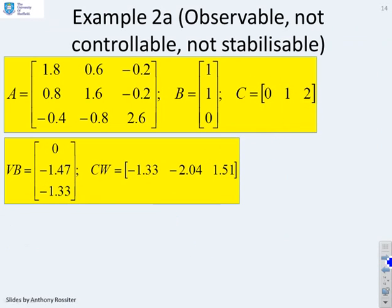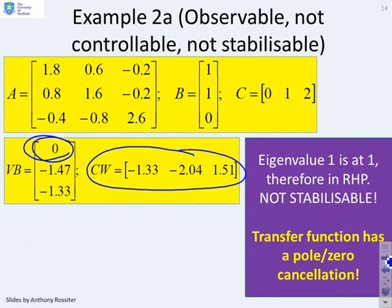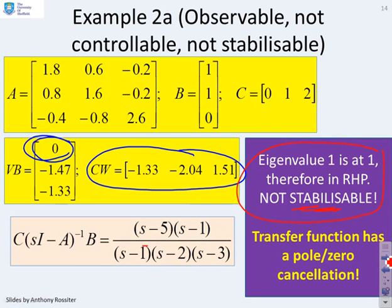Third example: a system that is observable but not controllable. The CW matrix is full with no zeros, so the system is fully observable. The VB matrix has a zero, indicating an uncontrollable mode corresponding to the first eigenvalue. That eigenvalue is at one, which is in the right half plane — therefore the system is not stabilizable. The transfer function shows the corresponding pole-zero cancellation, confirming the system is in non-minimal form.